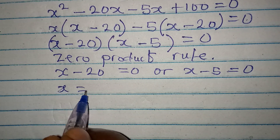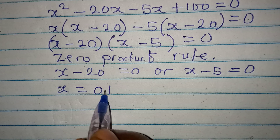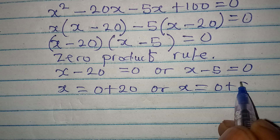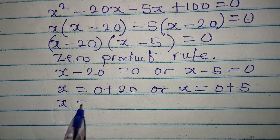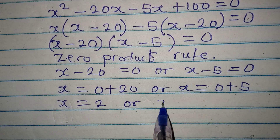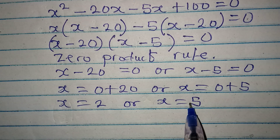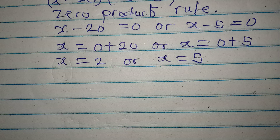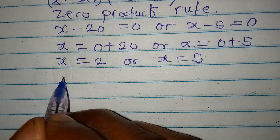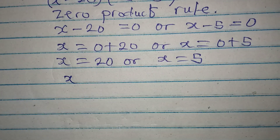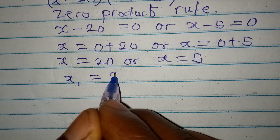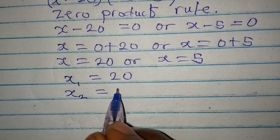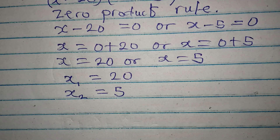From x minus 20 equals zero, x equals 20. From x minus 5 equals zero, x equals 5. Bringing the two solutions together: x₁ equals 20 and x₂ equals 5. But do you think both values of x will satisfy the original equation?